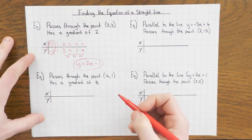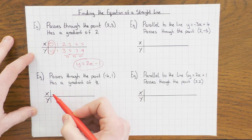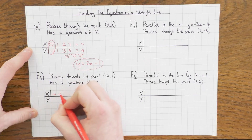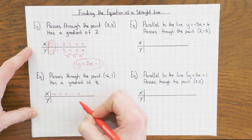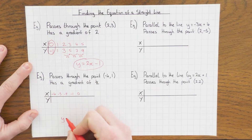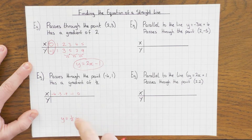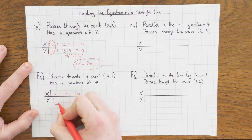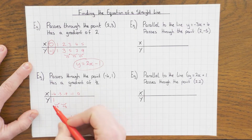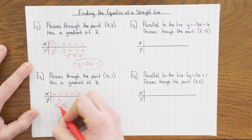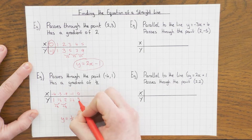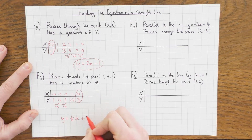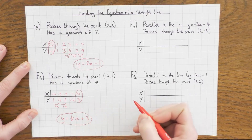Let's do the same thing but with a slightly different gradient. Notice the x-coordinate is minus 4, so I'm going to start at minus 4 and go to 0: minus 4, minus 3, minus 2, minus 1, 0. When x is minus 4, y is 1, and the gradient is a half, so y-values go up by a half each time: 1, 1½, 2, 2½, 3. So when x is 0, y is 3 — giving us y = ½x + 3.